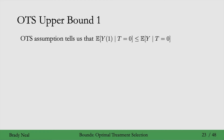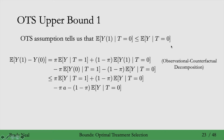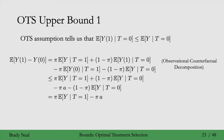For the upper bound, we start with the observational counterfactual decomposition. The counterfactual quantity here is upper bounded by the inequality we derived. Plugging that in, and then substituting A as we did in the no assumptions bound, we see that the second and fourth terms cancel, giving us the OTS upper bound.